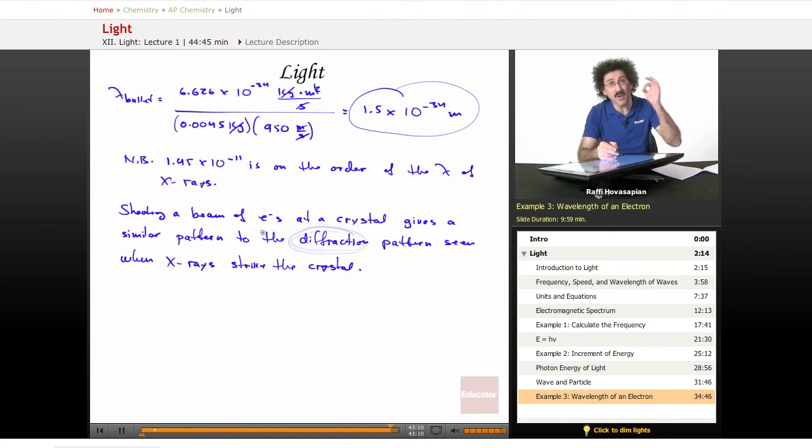Check this out. When I take a beam of electrons, which are particles, we know that they are particles, and we shine them at the crystal, guess what happens? We get the same diffraction pattern. That's very, very odd. That confirms the fact that particles behave like waves.